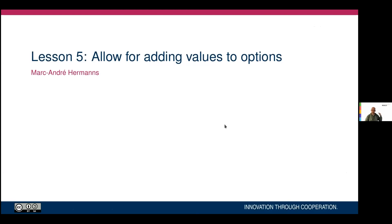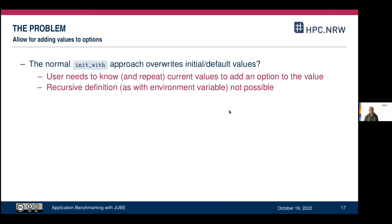Lesson 5: allowing for adding values to options. The problem with inheritance is you can only overwrite parameters — you can't add to them the way you'd do with PATH in shell, like 'export PATH=your_path:$PATH', which is a recursive definition. That's not possible with parameters in JUBE, so you need to find a workaround.